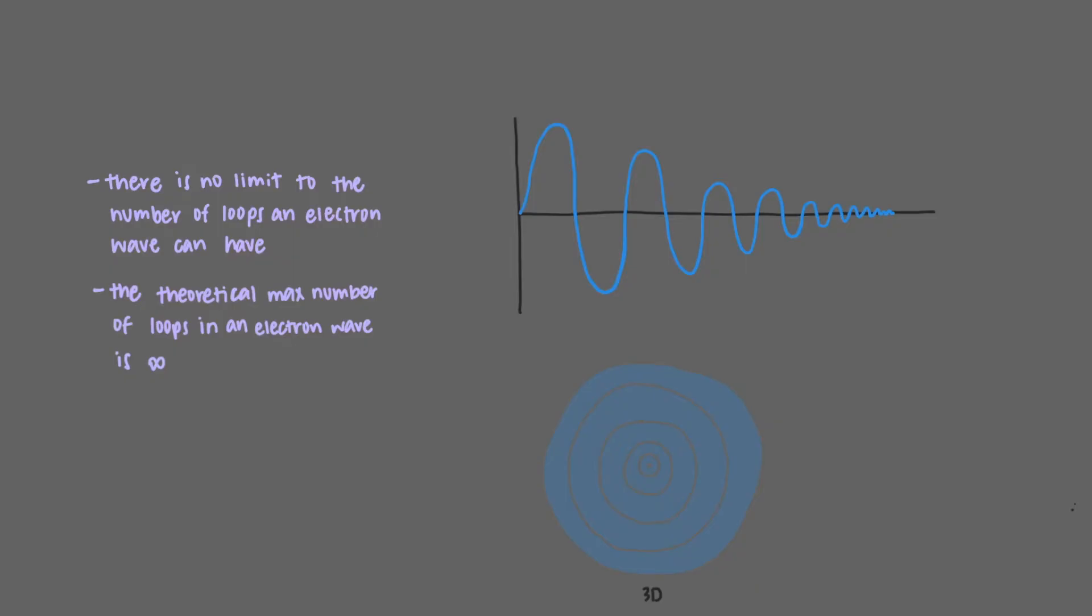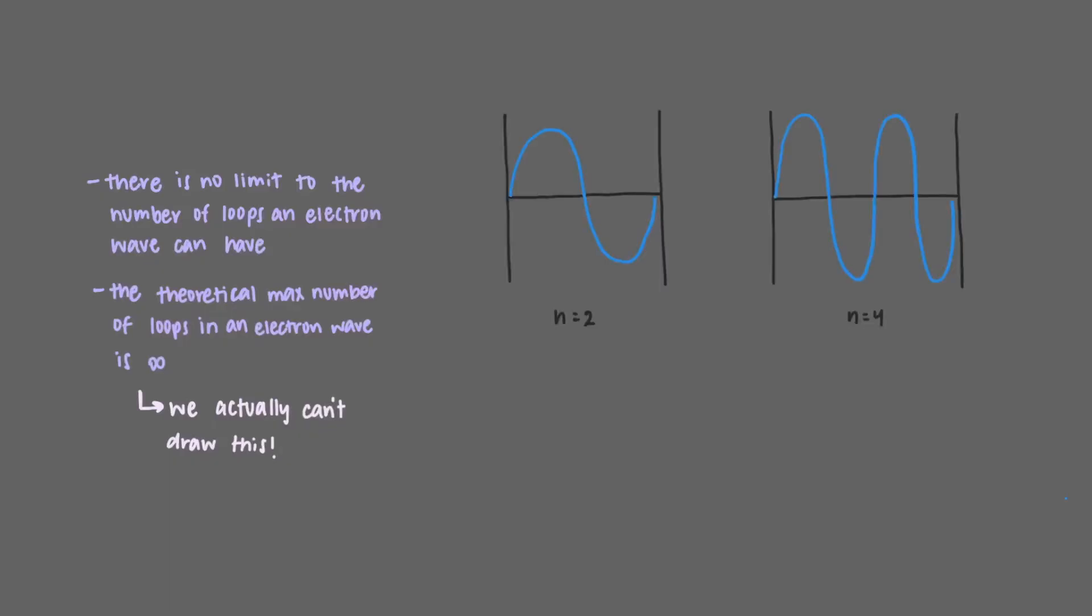Here's a few potential examples, but we actually can't draw a wave with an infinite number of loops. That's kind of how infinity works. But let's see if we can intuit what having an infinite number of loops would mean. Here's n equals 1 again, and here's n equals 2. What's the difference between these?